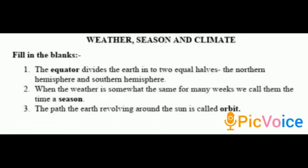Let's discuss some fill-in-the-blanks. First: the equator divides the earth into two equal halves — the northern hemisphere and the southern hemisphere. Second: when the weather is somewhat the same over weeks, we call the time a season. Third: the path the earth takes revolving around the sun is called its orbit.